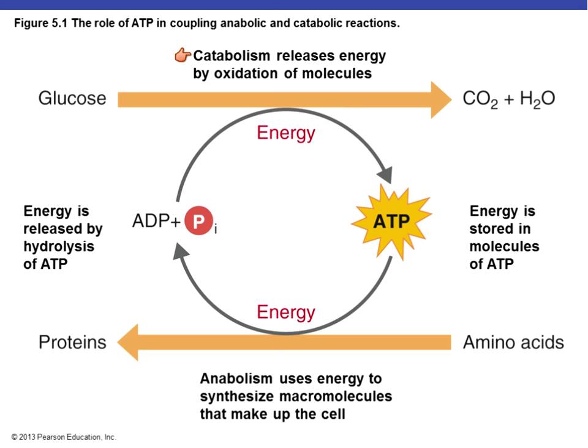Catabolism releases energy by the oxidation of molecules — we'll talk about what oxidation means shortly. When glucose is broken down you get byproducts but you also get energy in the form of ATP. In microbiology we always refer to energy in the form of ATP, and that's true for any biology class. That same energy we made can be used for a plethora of things within the cell — to build proteins from amino acids, portions of the cell wall, flagella, whatever the microbe needs to build up.